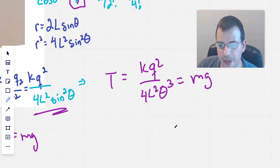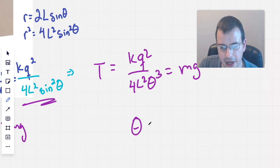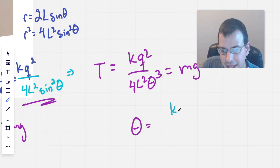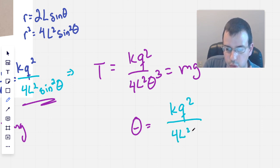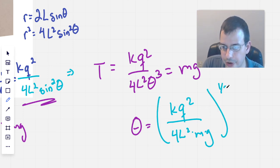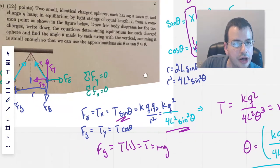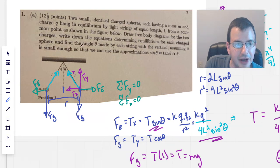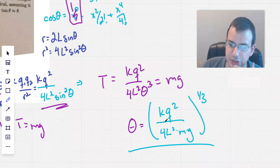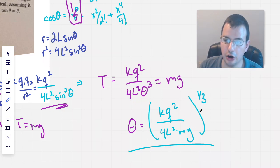And we're trying to solve for theta here. So for solving for theta, we would just rearrange this. Theta equals... wrong. My algebra skills are lacking. KQ squared over 4L squared times mass times gravity. And this will all be to the third root, one-third. There we go. So angle theta would have k, which is the electrostatic constant, q for the charges, 4, length of the string squared, times mass times gravity, all to the one-third power.